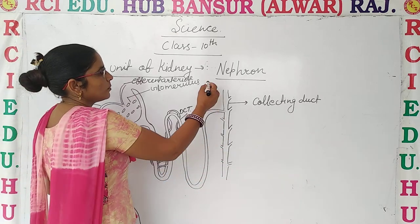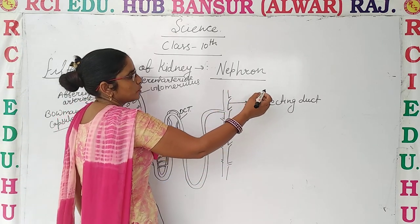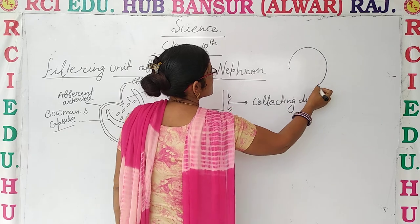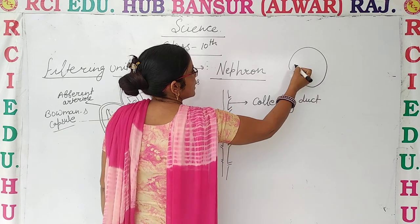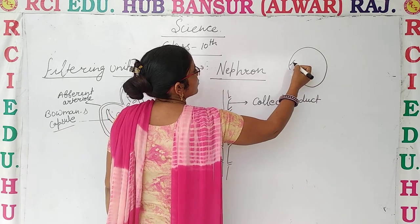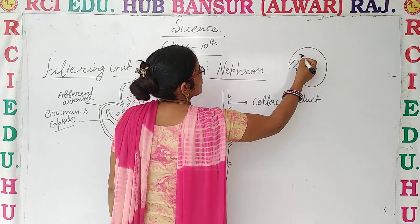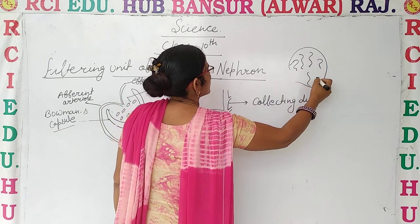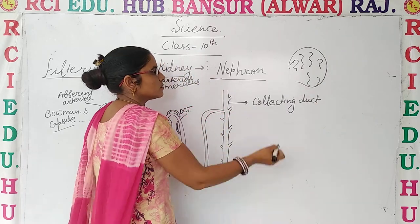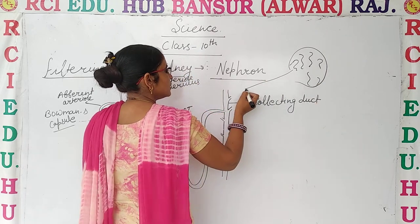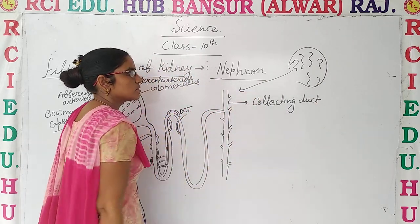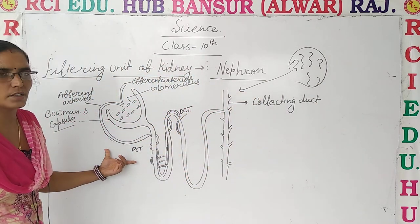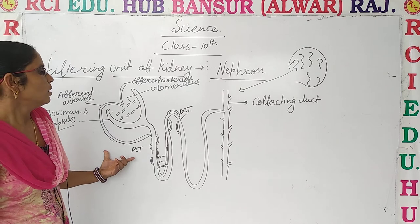The kidney is bean-shaped and it has millions of nephrons, or filtering units. If we discuss about a single unit, then the structure of that single unit is this — it is the nephron.